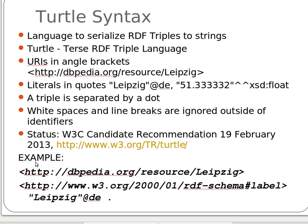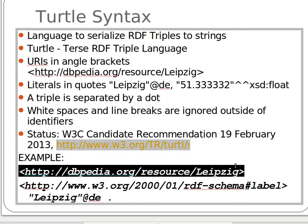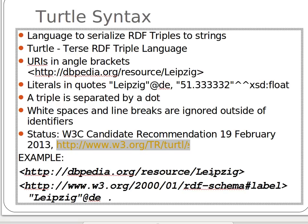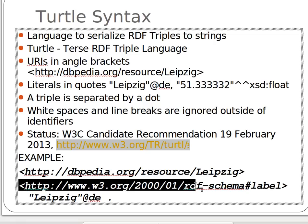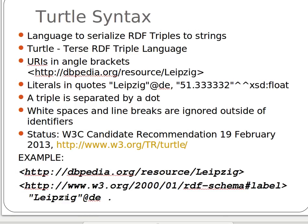A simple example of a triple in Turtle format: we have a URI here which is our subject — about the Leipzig city. As you can see it's a URI, and then a property — again another URI — it has a label, and then a value of 'Leipzig' with language tag 'de'.